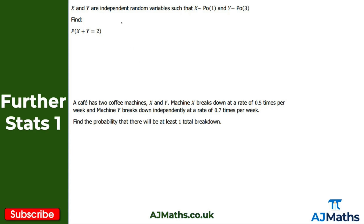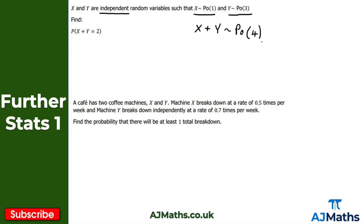The first example is very basic — you're not going to get an exam question that looks like this, but it's good practice. We've got x and y which are independent random variables, with a distribution for x and a distribution for y. We want to find the probability of x plus y being equal to two. Because these are both Poisson distributions and they're independent, x plus y will be a Poisson distribution with parameter one plus three, giving us four.